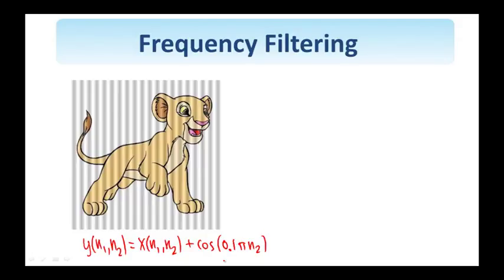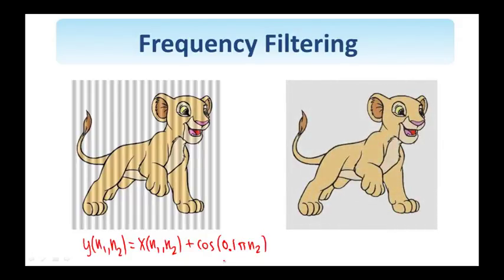So, it only rejects the minus 0.1*pi, plus 0.1*pi frequency in the omega-2 dimension. So, we do that and come back to the spatial domain and the resulting image is this one. So, we see that the little guy who was behind bars now has been freed.